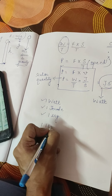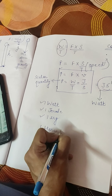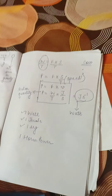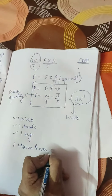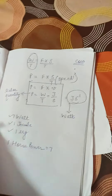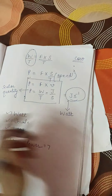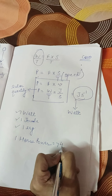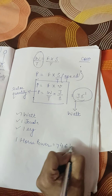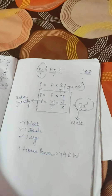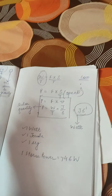One horsepower is also a unit of power. One horsepower is equal to 746 watts. We will cover up to this point only.